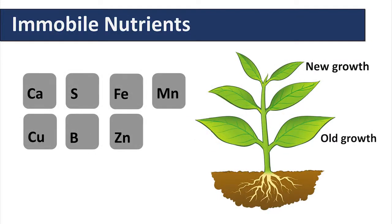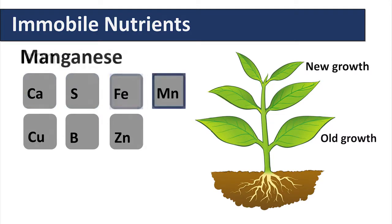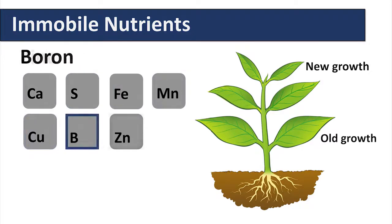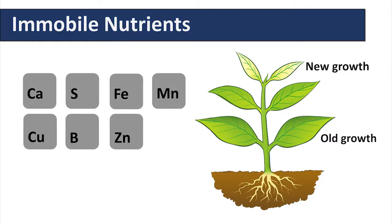Those nutrients which are immobile in the phloem include calcium, sulfur, iron, manganese, copper, boron, and zinc. If insufficiencies occur in the root soil, nutrient deficiencies will be expressed in the new growth because they cannot be remobilized from the old growth and translocated into the new growth. So these nutrient deficiencies will always occur in the new growth.